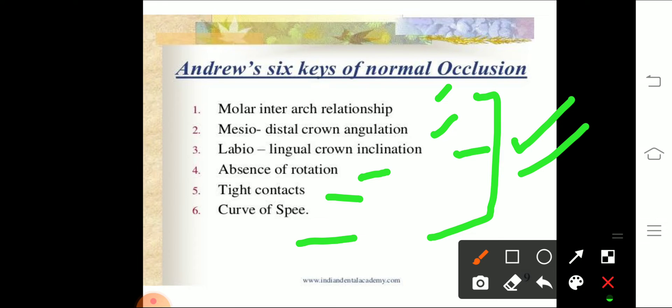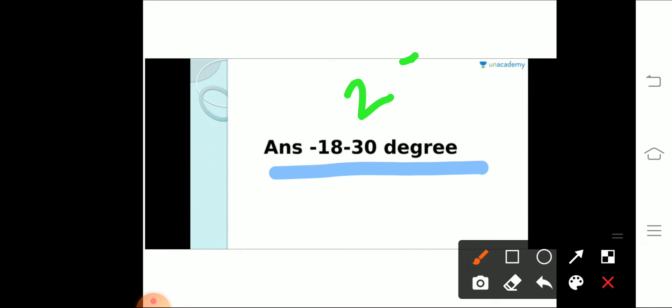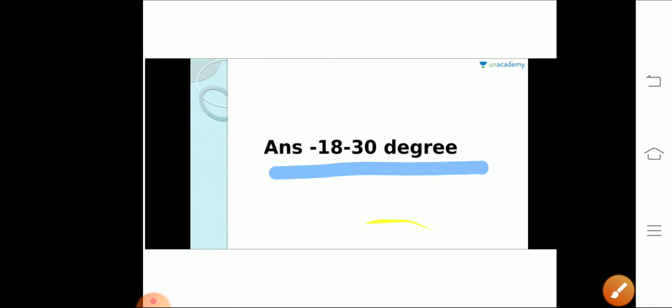The next question is the normal value of mandibular plane angle. Options are 18 to 30 degree, 30 to 45 degree, 180 degree, and zero degree. The normal value of mandibular plane angle is in between 18 to 30 degree. The most commonly accepted value is around 25 degree. So the answer 18 to 30 degree is correct here.